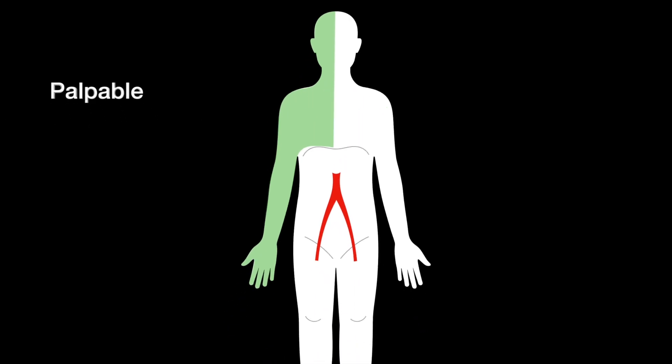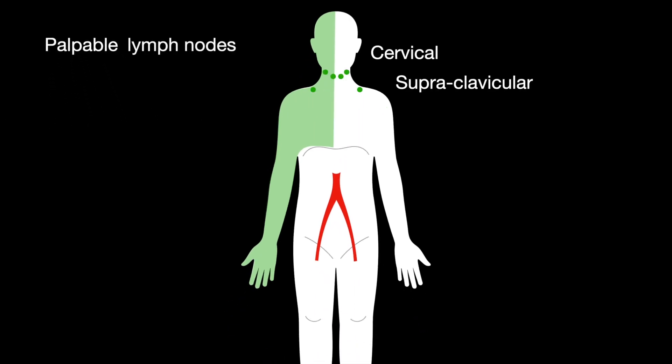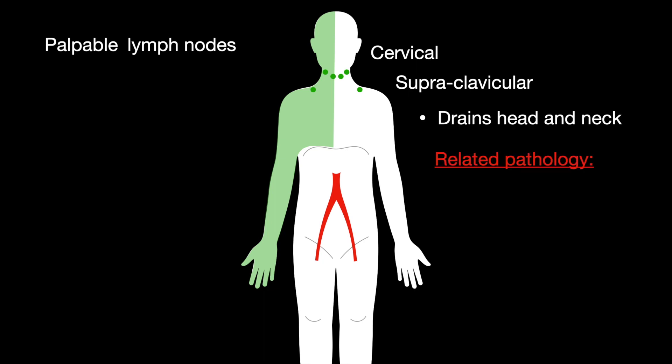Palpable lymph nodes. The cervical lymph nodes and the supraclavicular lymph nodes drain the head and neck. Related pathology includes upper respiratory infections, mononucleosis, and Kawasaki disease.